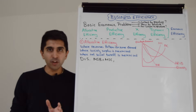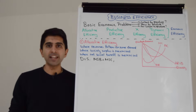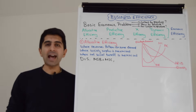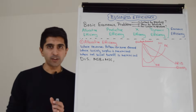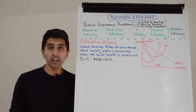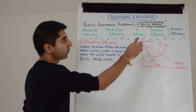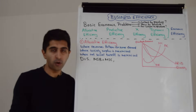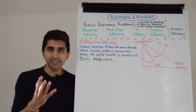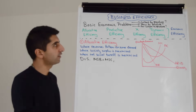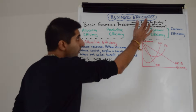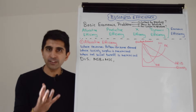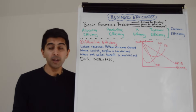Hi everybody. We know that economics is a study of how to best solve the basic economic problem — how to allocate scarce resources given unlimited wants. That forces choices to be made: what to produce, how to produce, and for whom to produce. In a market economy, businesses answer a lot of these questions. They answer what to produce and how to produce, and are a fundamental part of answering the basic economic problem.